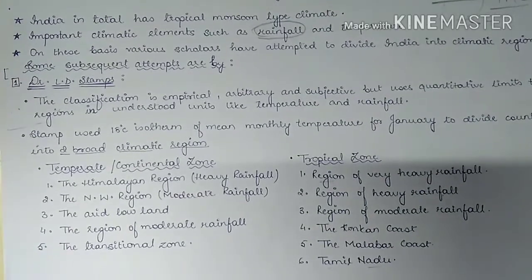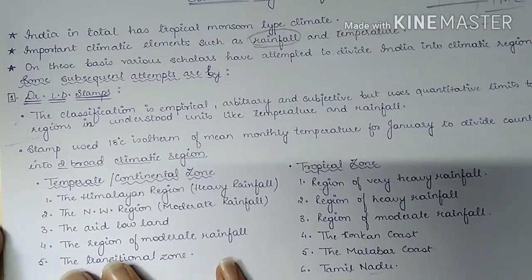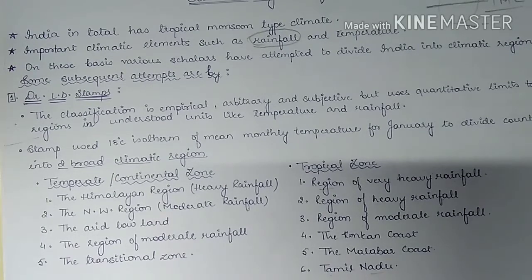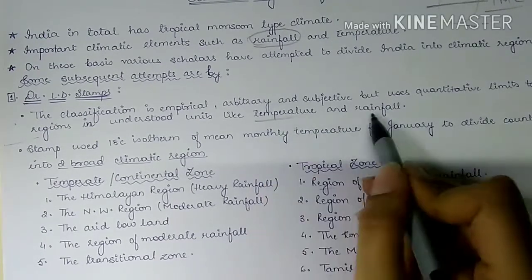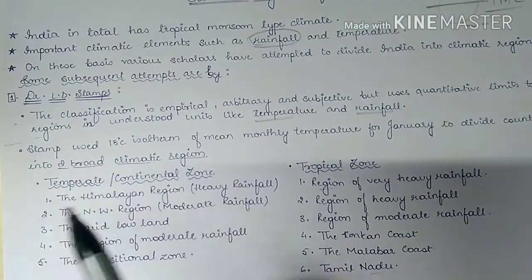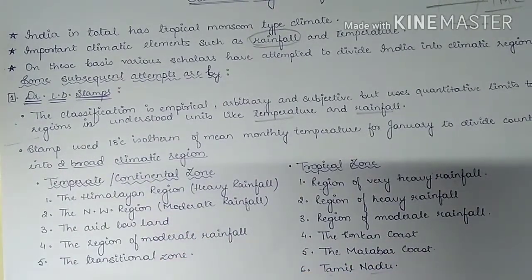The first classification is by Dr. LD Stamp. His classification was empirical, arbitrary, and subjective, but it used quantitative limits to define regions. He used temperature and rainfall for understanding all the units in his classification.